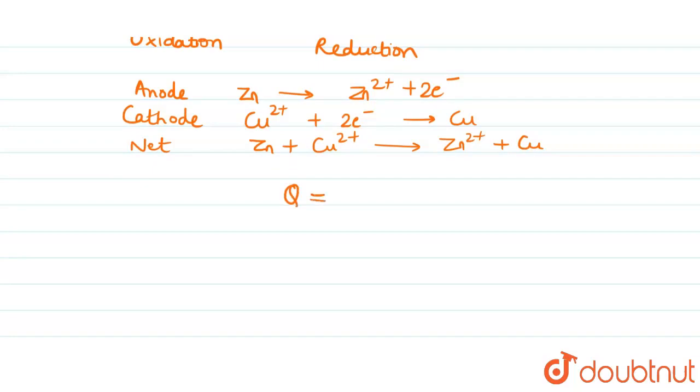Now finding the reaction quotient Q, which is a type of equilibrium, we write it as Zn2+ aqueous concentration upon concentration of Cu2+ aqueous. We do not write this because these are solid forms and this is aqueous and this is aqueous. So this is the reaction quotient.